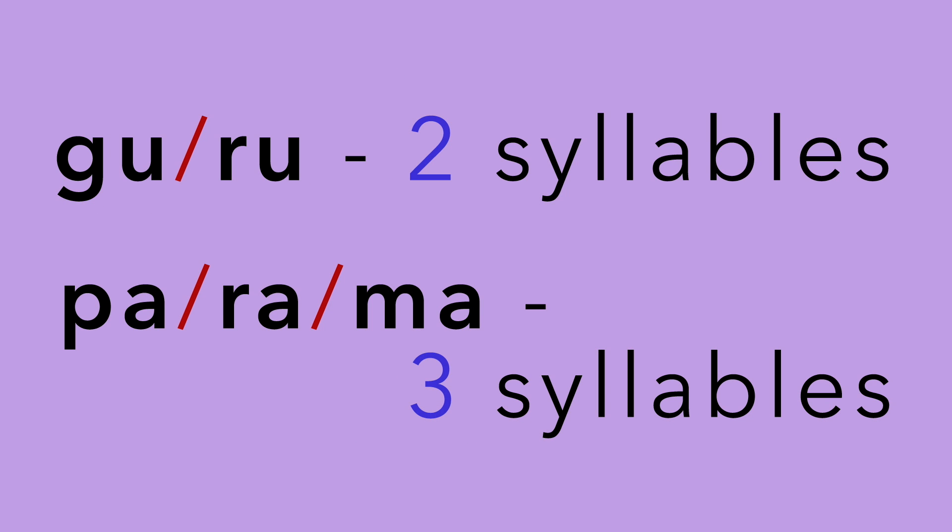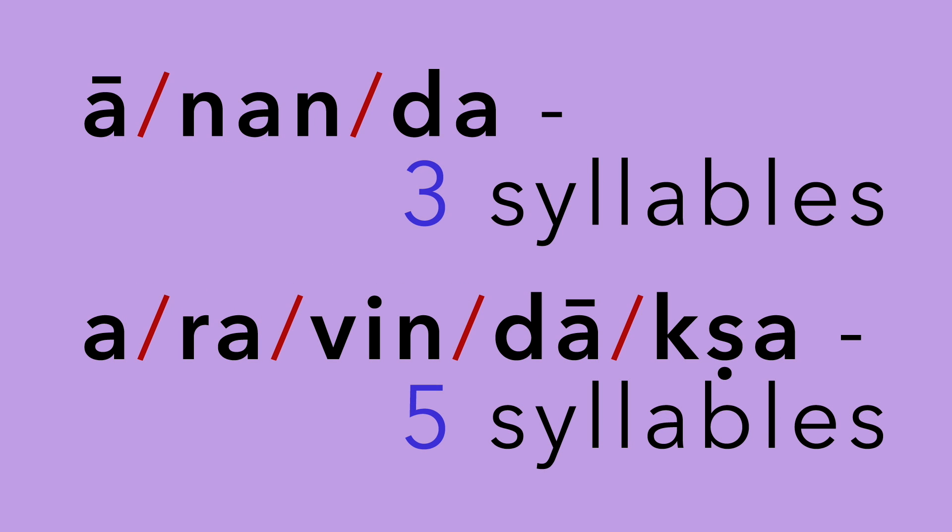So here's our syllable count. Guru — two syllables. Parama — three syllables. Ananda — also three syllables. And finally, Aravindaksha — five syllables.